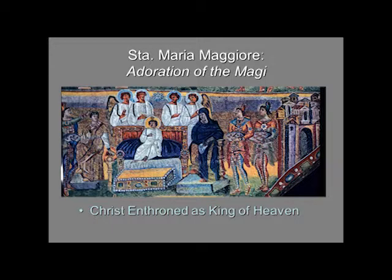Here we're looking at the Adoration of the Magi. Christ is enthroned on a cushioned throne with a bejeweled footstool — his feet do not reach the footstool. He's enthroned as though he is an emperor, the King of Heaven, on a Byzantine-style throne bejeweled with a large poofy pillow. He has a retinue of four angels behind the throne. Except for his smaller size, Christ is not childlike — he's fully divine as well as fully human, sitting erect with proportions of a miniature adult rather than an infant.